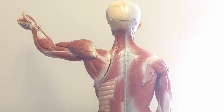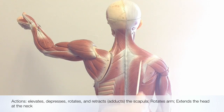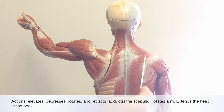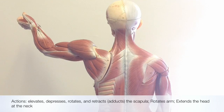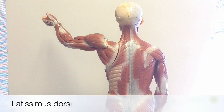It inserts onto the clavicles anteriorly and here on the scapula at its spine and the acromion process. The actions of the trapezius include elevation, depression, rotation, and retraction or adduction of the scapula. It's also used in arm rotation and extends the head at the neck.